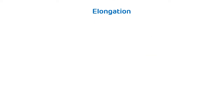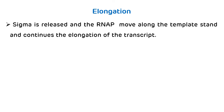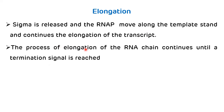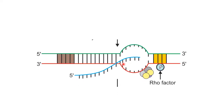During elongation, the sigma factor is released once 10 nucleotides are added, and the RNA polymerase enzyme moves along the template strand, continuing the elongation of the transcript. The elongation of the RNA chain continues until a terminal signal is reached.